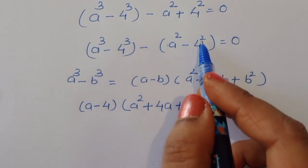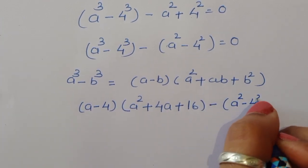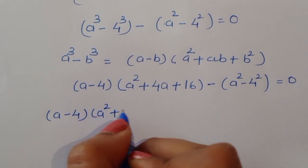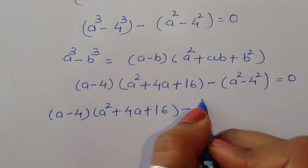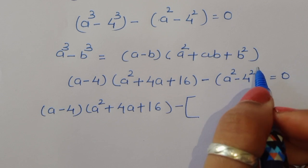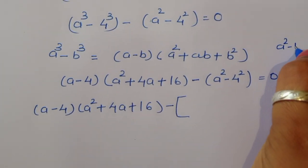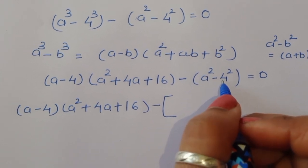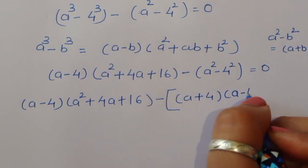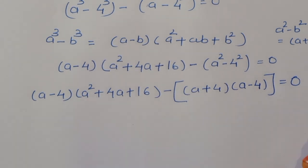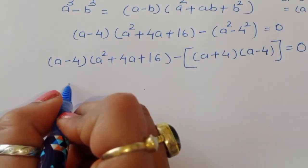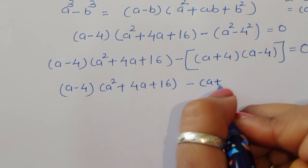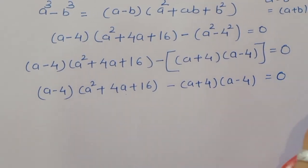For a² - 4², we apply the difference of squares formula: a² - b² = (a + b)(a - b). So a² - 4² = (a + 4)(a - 4). Our equation becomes: (a - 4)(a² + 4a + 16) - (a + 4)(a - 4) = 0.